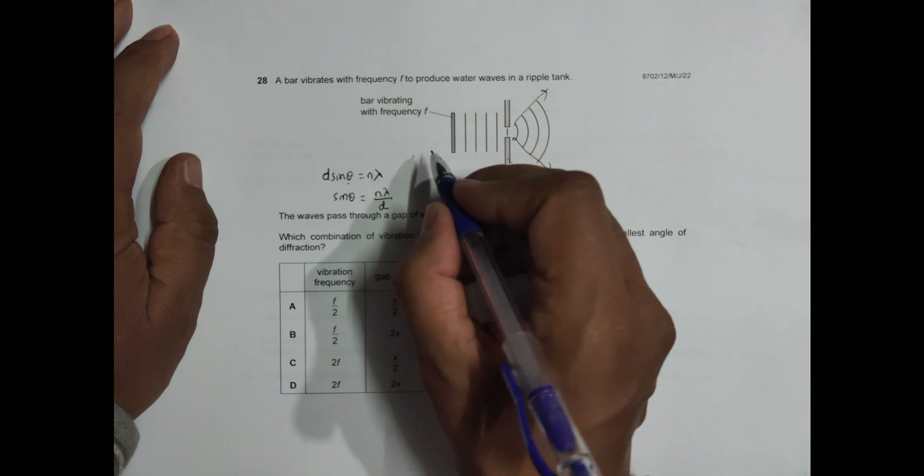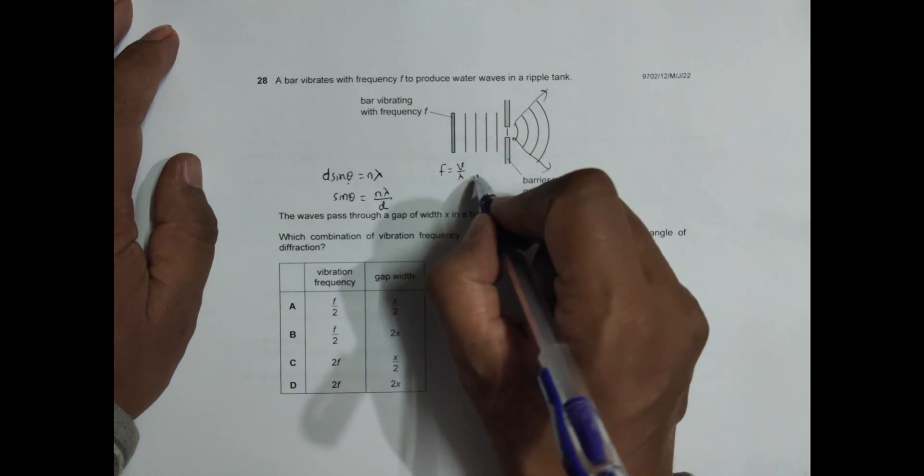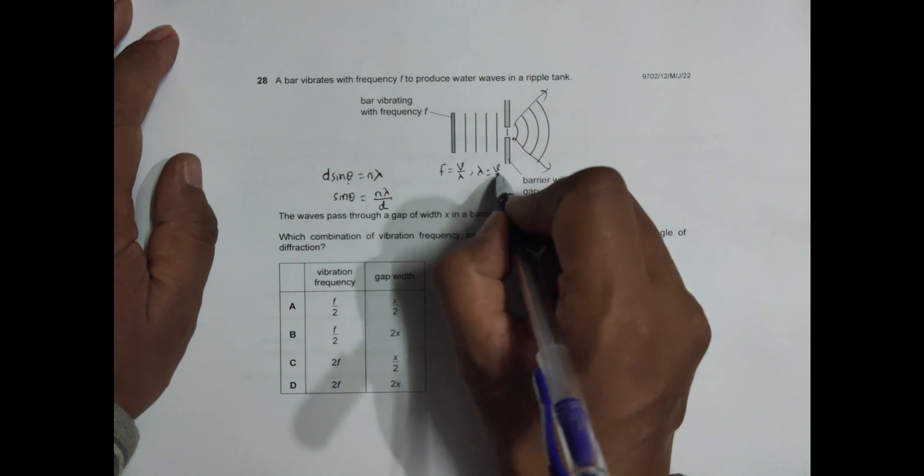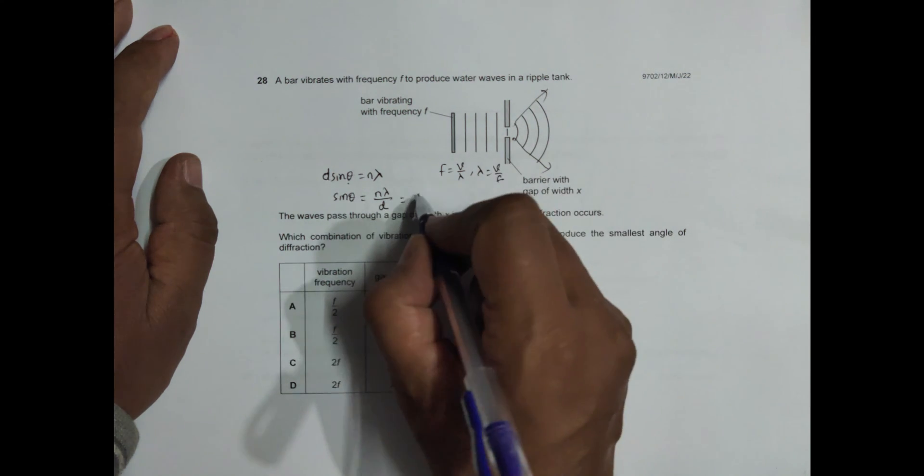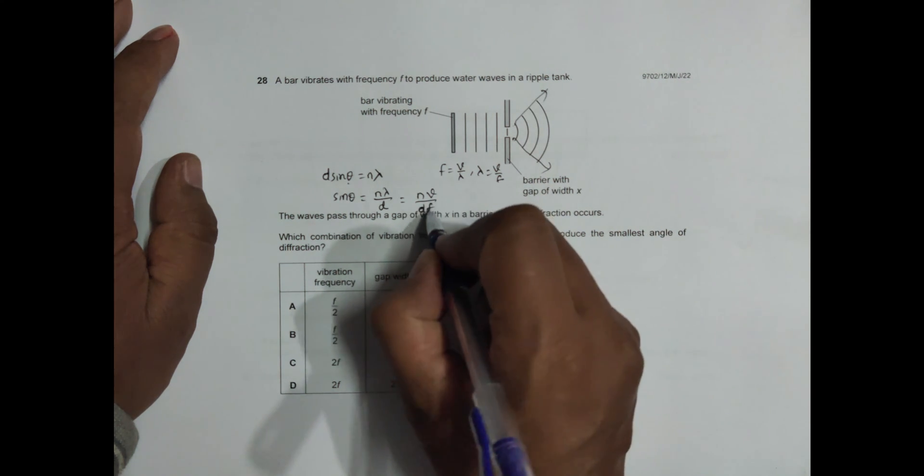Here we are given frequency, so I need to convert wavelength to frequency. We know frequency equals velocity by lambda, so lambda equals velocity by frequency. So this becomes n velocity divided by d frequency.